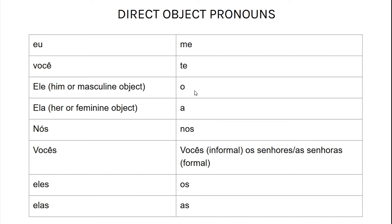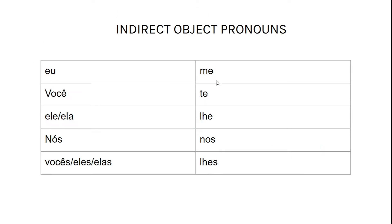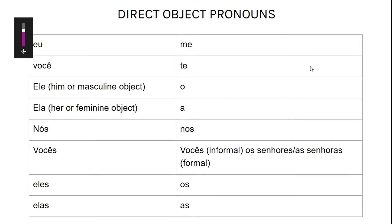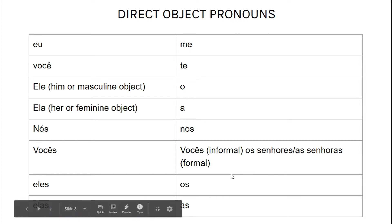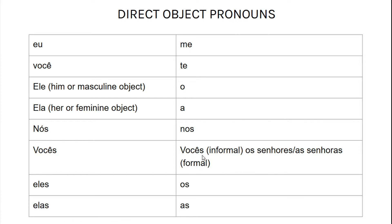The indirect object pronouns are the exact same for everything else except for ele, ela, em vocês, eles, elas, tá bom? Vocês entenderam? Notice that. Don't focus too much on vocês informarem os senhores e senhoras. Pela prova, não vamos usar esses pronomes, acho. Acho que não vamos usá-los.